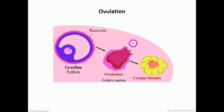Let's take a look at the process of ovulation. The Graafian follicle, after ovulation occurs, shows the secondary oocyte surrounded by the zona pellucida and some granulosa cells. The rest of the Graafian follicle will become the corpus luteum or the yellow body, and the corpus luteum secretes mainly progesterone. So in the first part of the cycle before ovulation — the follicular phase — the Graafian follicle produces mainly estrogen. After ovulation, the corpus luteum produces mainly progesterone, and this is known as the luteal phase.